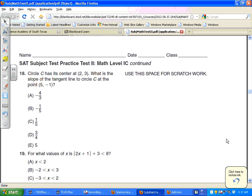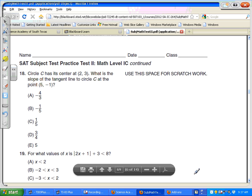Problem number 18, circle C has its center at 2,3. What is the slope of the tangent line to the circle at the point 5, negative 1?